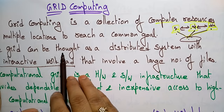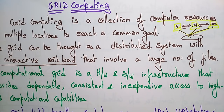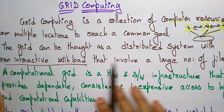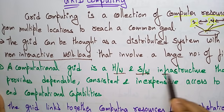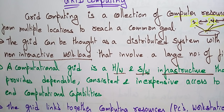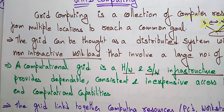A grid can be thought of as a distributed system with non-interactive workload involving a large number of files. A computational grid is a hardware and software infrastructure that provides dependable, consistent, and inexpensive access to high-end computational resources.